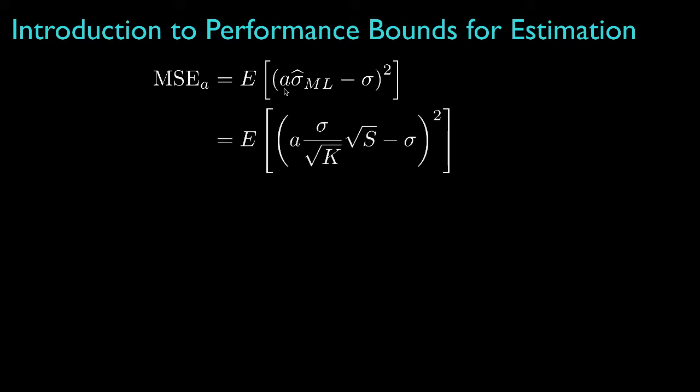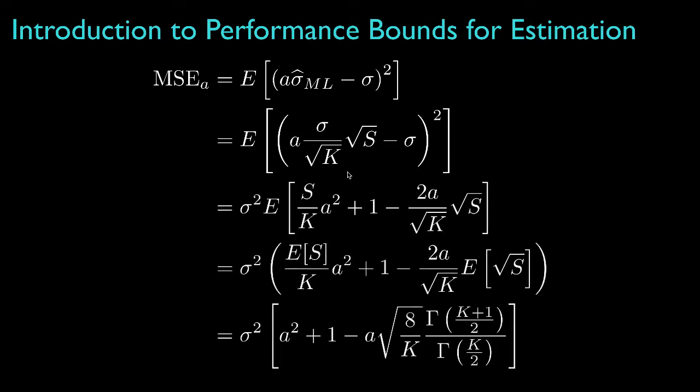Then, if we replace the maximum likelihood estimator with its functional form and, as before, carry out all of the algebra and the required expectations, we'd get an expression that's now a function of the scale factor a.